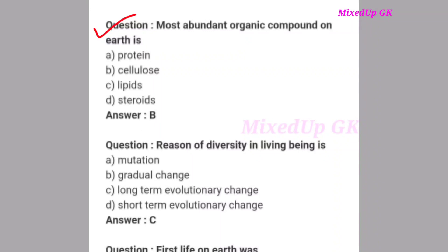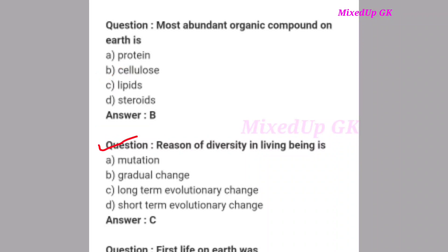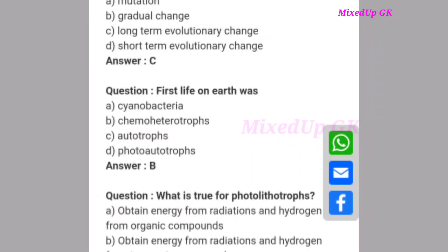Next question: The most abundant organic compound on Earth is what? The correct answer is option B: cellulose. Cellulose is the most abundant organic compound on Earth. Next question: Region of diversity in living beings is what? The correct answer is option C: long-term evolutionary changes. Next question: What was the first life on Earth? The correct answer is option B: chemo-heterotrophs.